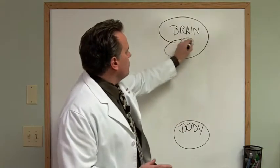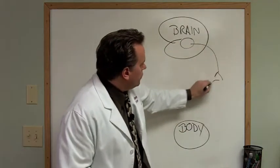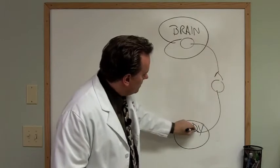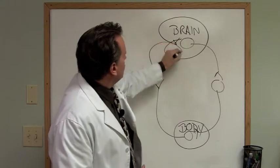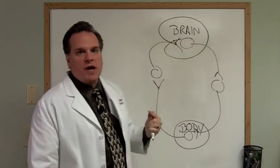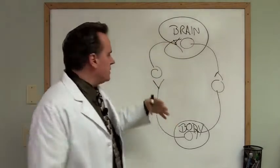The brain, through neurological control, through nerve pathways, has a loop going back and forth between the brain and the body and it is imperative that this system stay intact.